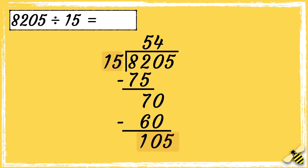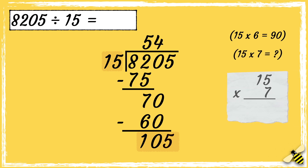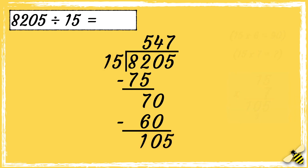Finally, we can work out how many 15s go into 105. I don't know this from the top of my head, so I'm going to do some estimating. We figured out earlier that 15 times 6 is 90, which is too low, so I'm going to try 15 times 7. 15 times 7 is 105, so 15 goes into 105 seven times. The answer is 547.